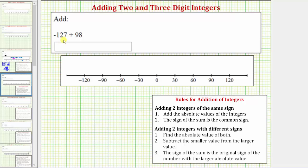We're asked to add negative 127 and 98, or find the sum of negative 127 and 98. Before we find the sum using the formal rules for adding integers, we should be able to recognize that the negative 127 is going to outweigh the positive 98, and therefore the sum is going to be negative.